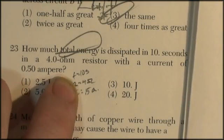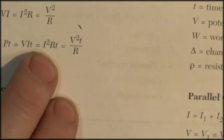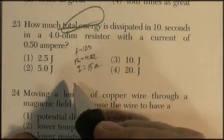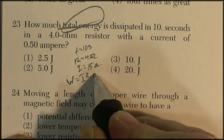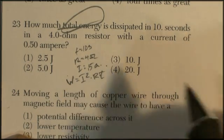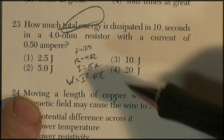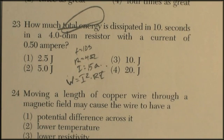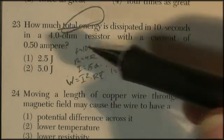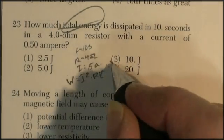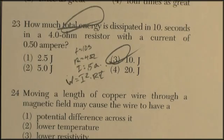Total work, total energy, is I squared times R times T. So let's see, 0.5 squared is 0.25 times 4. That looks like 1 times 10 is 10. Let's say the answer is 10 joules without a calculator.